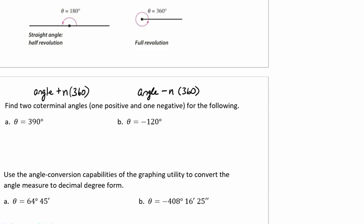So if we're trying to find the coterminal angle, one positive and one negative angle for the following degrees. Here we have theta equals 390 degrees. So 390 plus 1 times 360 equals 750 degrees. So I have my positive angle. That means that this angle, 390 and 750, have the same initial side and the same terminal side.